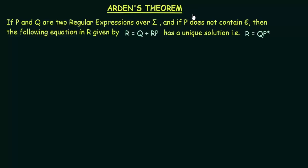Arden's Theorem is important when you deal with regular expressions. It states that if p and q are two regular expressions over sigma, and if p does not contain epsilon, then the following equation in R, given by r = q + rp, has a unique solution, that is, r = qp*.